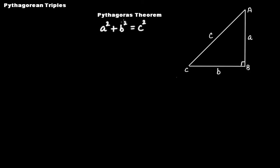Pythagoras theorem says that if you have a right-angled triangle ABC, right-angled at B, where A and B are the lengths of the two legs and C is the length of the hypotenuse, then A squared plus B squared is equal to C squared.